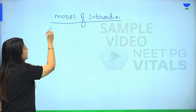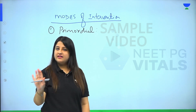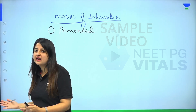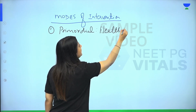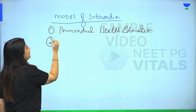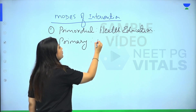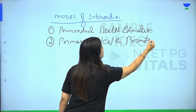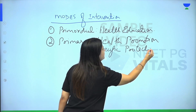In primordial level of prevention, risk factors are not present. So how will you achieve this? How will you make people not start drinking, not start smoking? Through educating people. So the mode of intervention here is health education. For primary level of prevention, we achieve it through two modalities: number one, health promotion, and number two, specific protection.